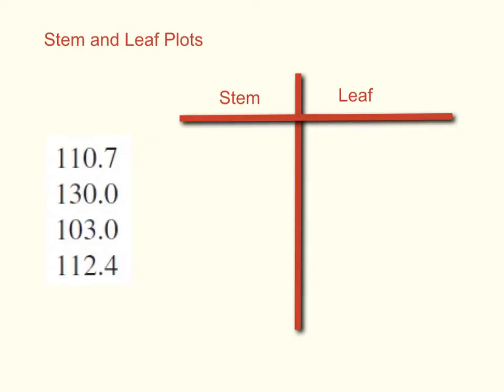I have a few numbers down the side of the page here. What I'm going to do is always start with the smallest number. That's where my stem and leaf plot starts. In this case, my smallest number is 103.0.